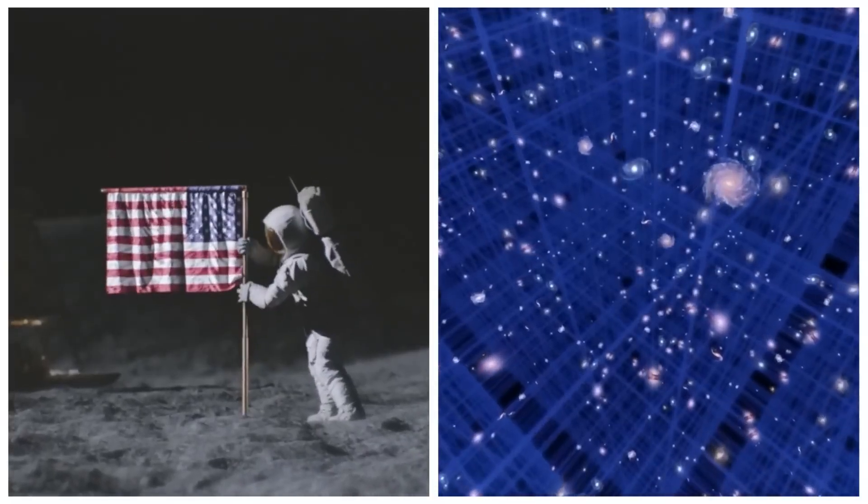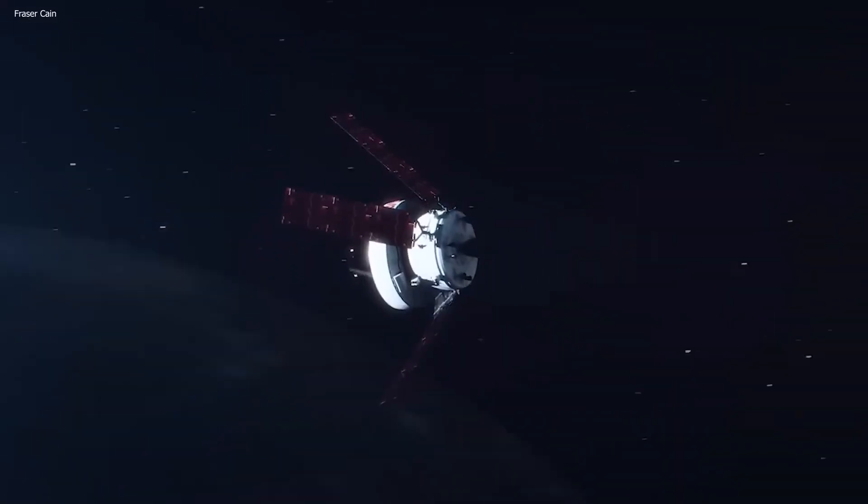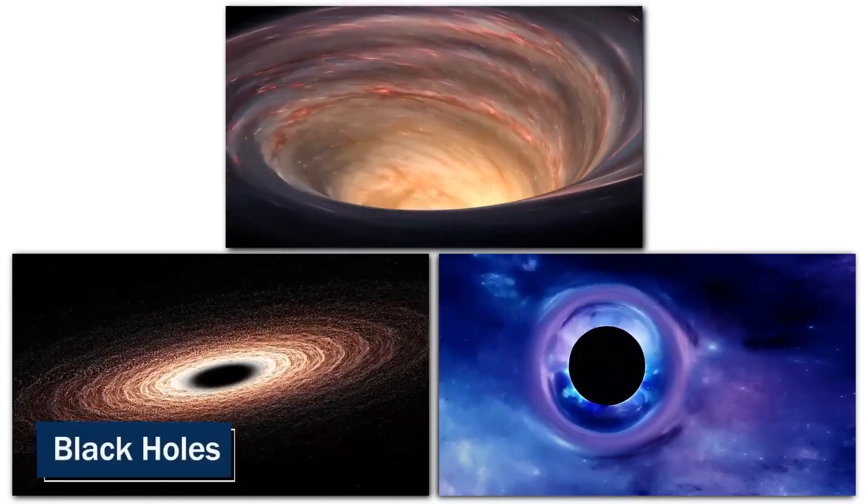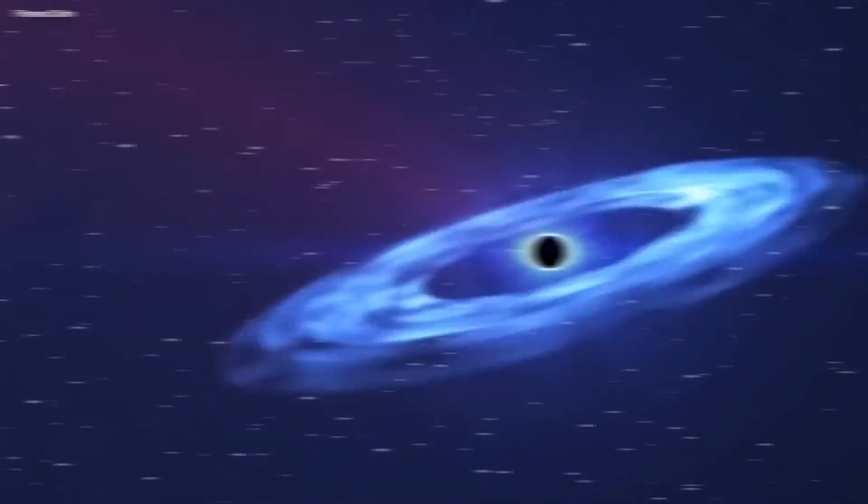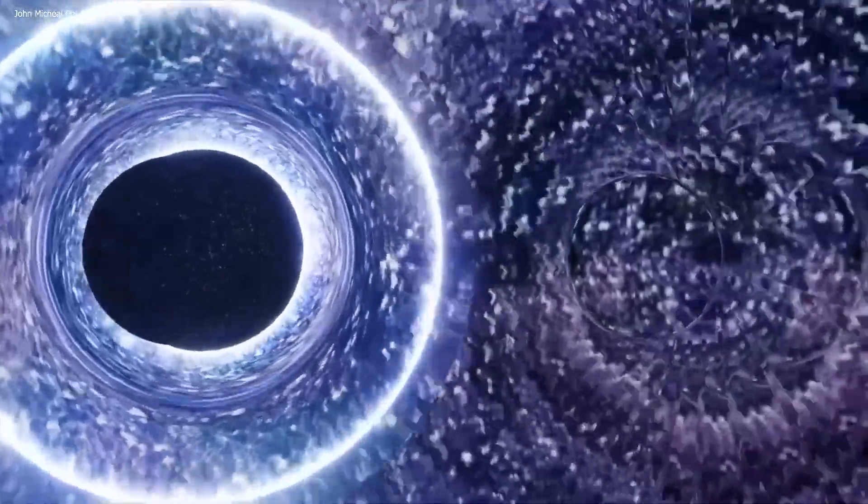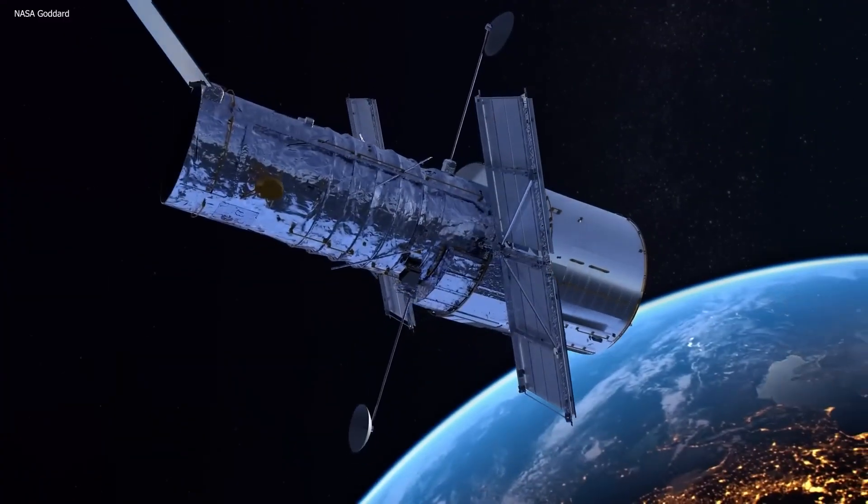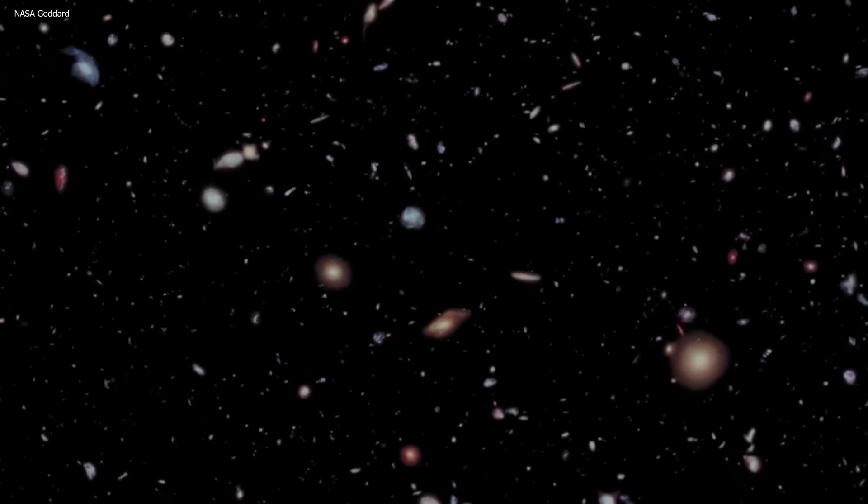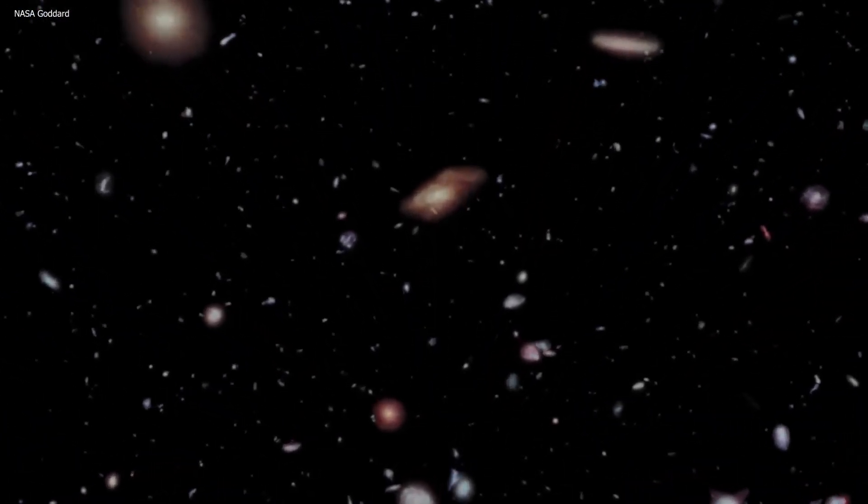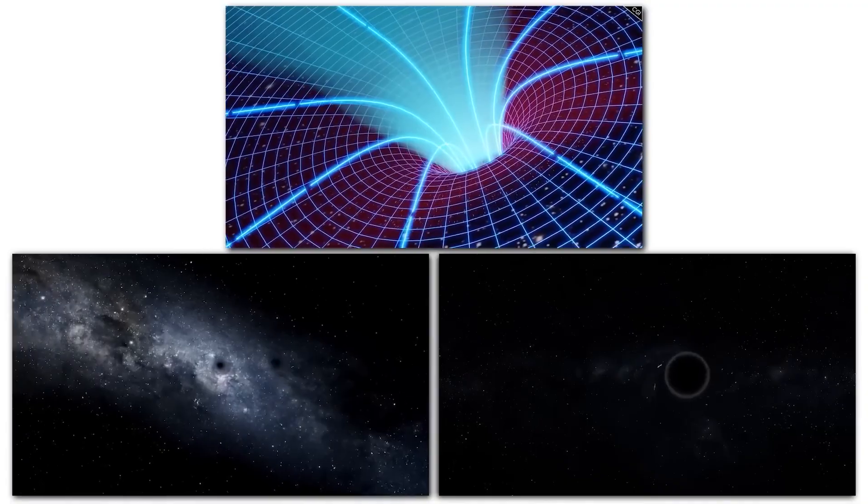NASA has been at the forefront of exploring our universe and searching for evidence of exotic objects like wormholes for decades. From sending spacecraft to the farthest reaches of our solar system to studying the behavior of black holes and other celestial objects, NASA has been working tirelessly to better understand our universe and the laws that govern it. In the process, they've been searching for evidence of wormholes, which could potentially provide us with a shortcut through space and time. One of the most exciting missions in this quest was the launch of the Hubble Space Telescope, which has captured images of some of the most distant and exotic objects in the universe, including black holes, which could potentially be the entrance or exit points of a wormhole.